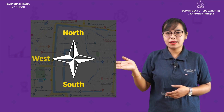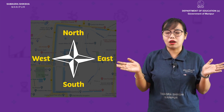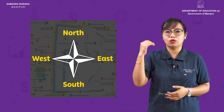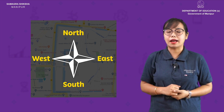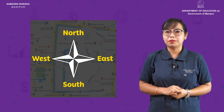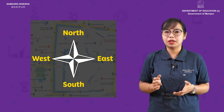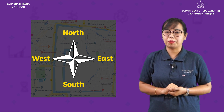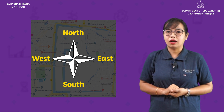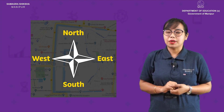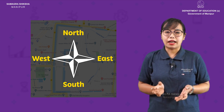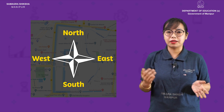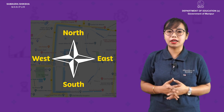This symbol shows North, South, West, and East. This direction symbol is placed in the upper right-hand corner of the map to indicate the direction of the map.